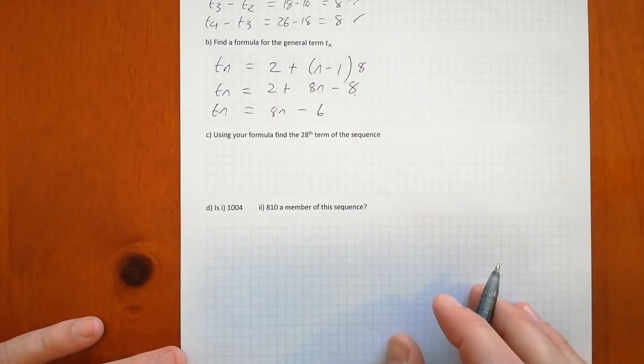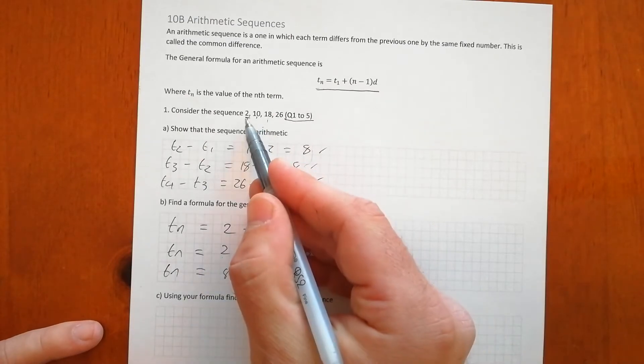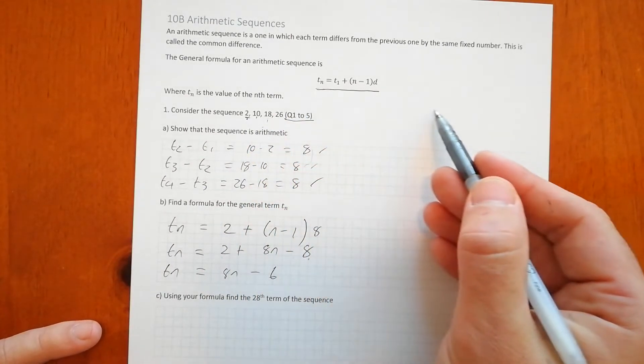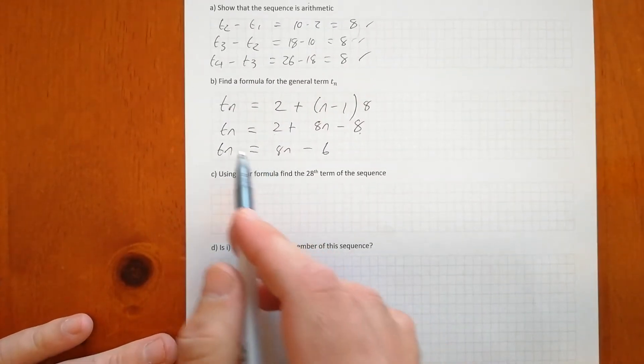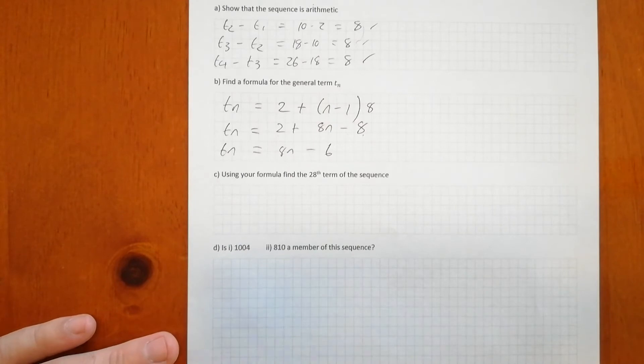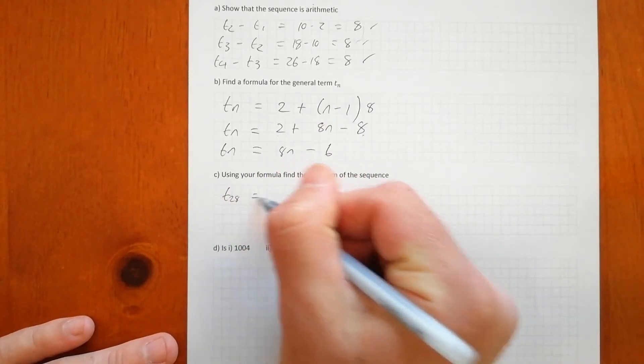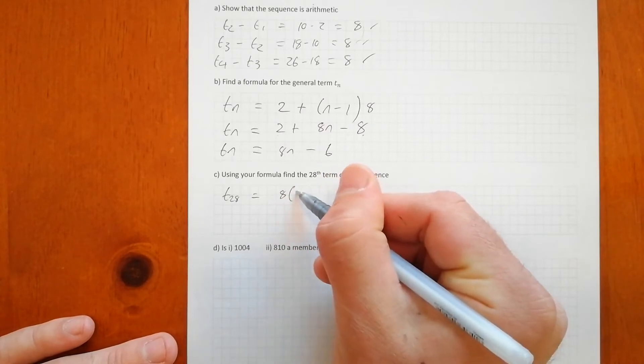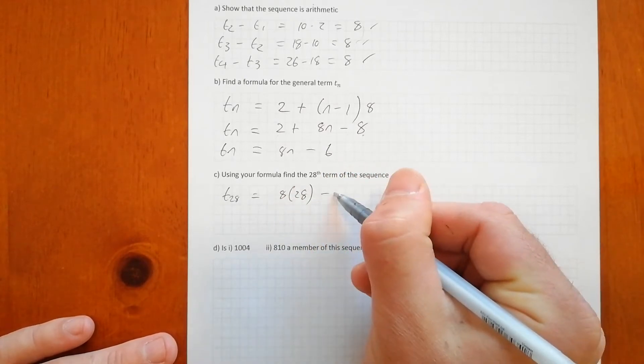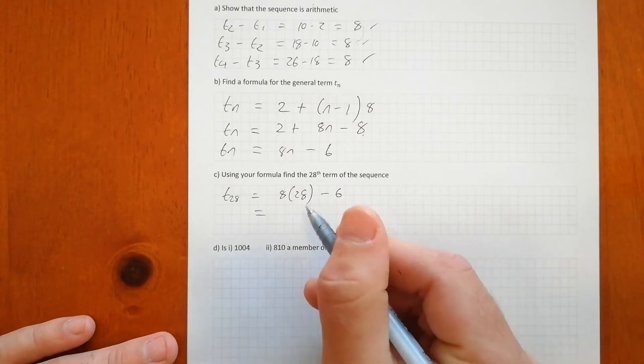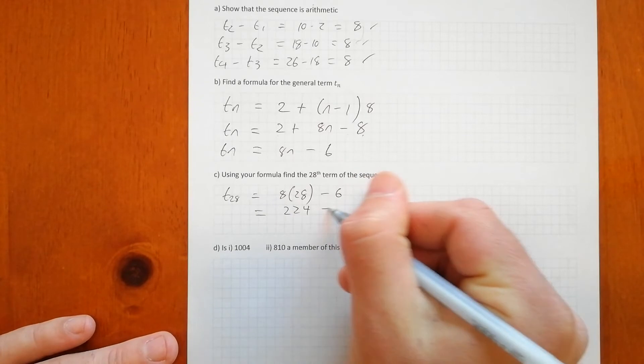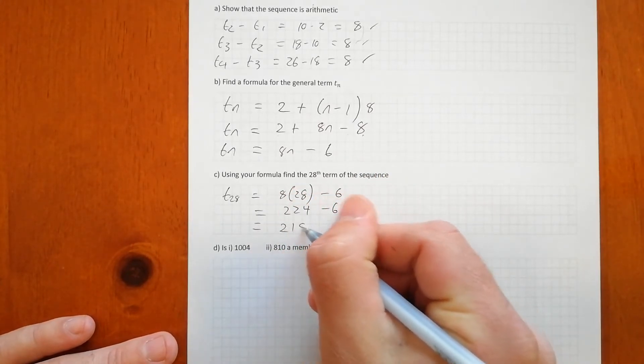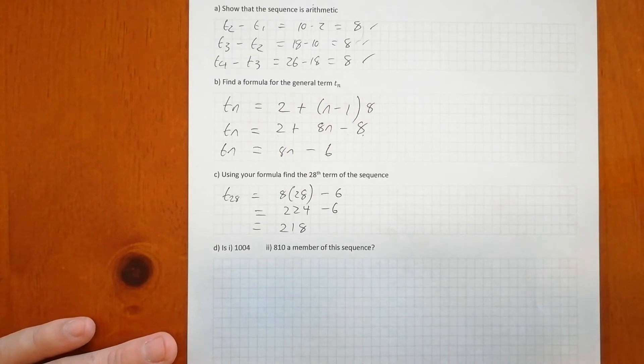Excellent. Using your formula, find the 28th term of the sequence. We've listed the first four terms here, and we could go on indefinitely until we get to the 28th term, but that would be quite tedious and monotonous. So rather, we're going to use the formula we've got here. We're going to find the 28th term, that's going to be 8 times 28 take away 6. So 8 times 28 is 224, and then take away 6 is 218. So the 28th term will be 218.